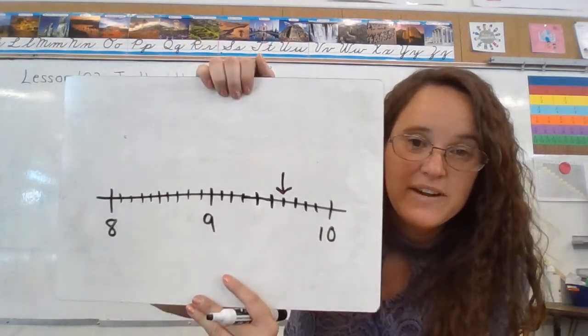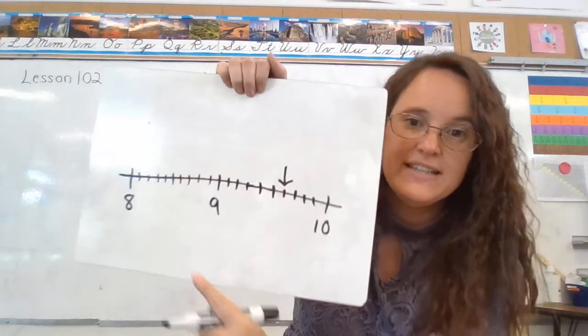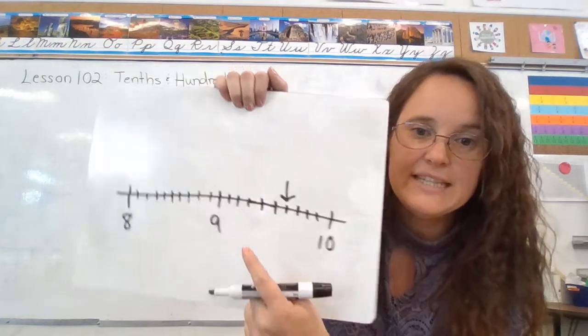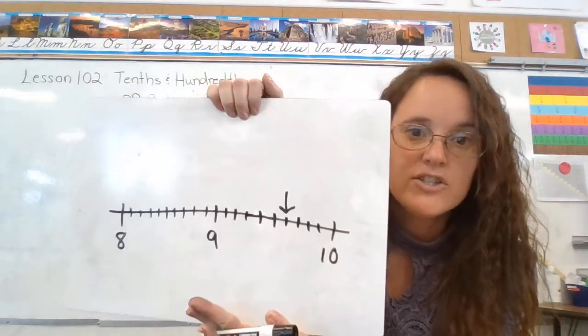So exactly where is the arrow pointing? Is it between the 8 and the 9? Nope. It's between the 9 and the 10.